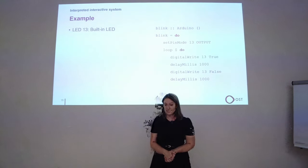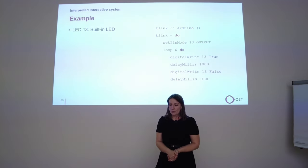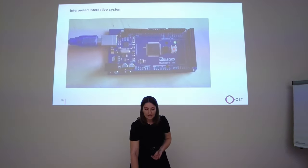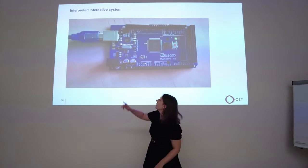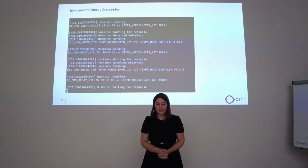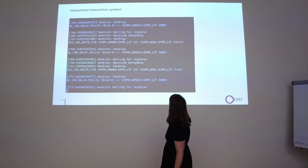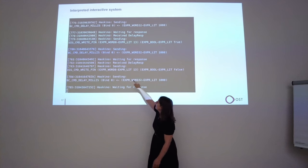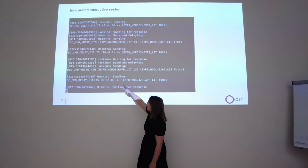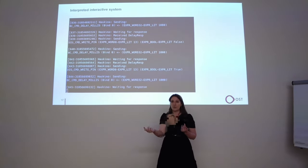Here is the example program with the LED — similar to the Arduino program. First I set the pin mode, then I have an infinite loop where I turn the LED on and off. At execution you can see the built-in LED blinking. In the log of the Haskell code you can see the sending of the write pin command as false and true, with the delay millisecond command sent in between. Haskino then waits until a response comes back one second later.